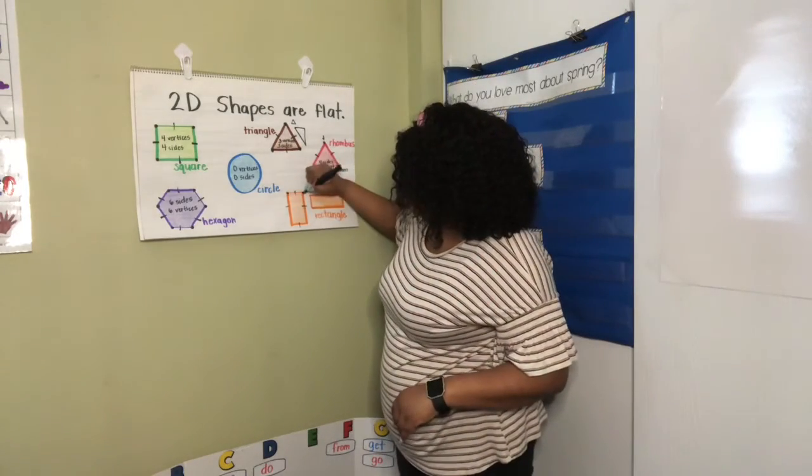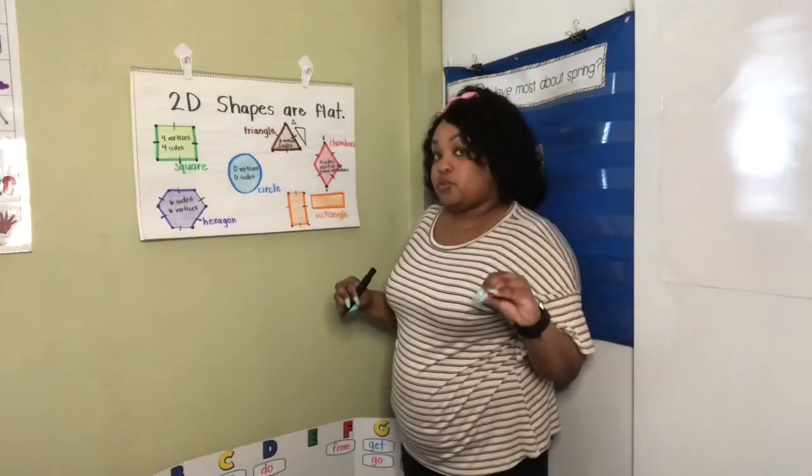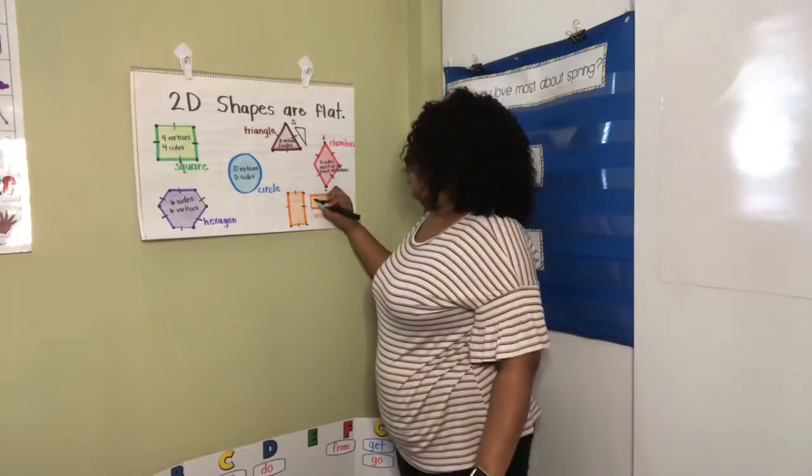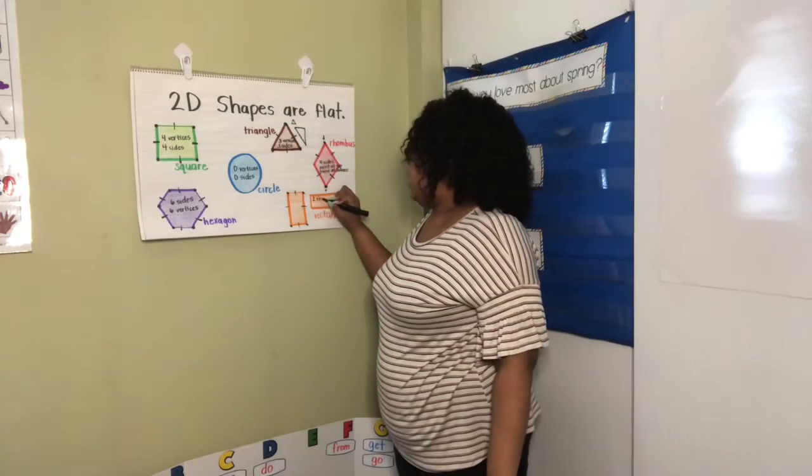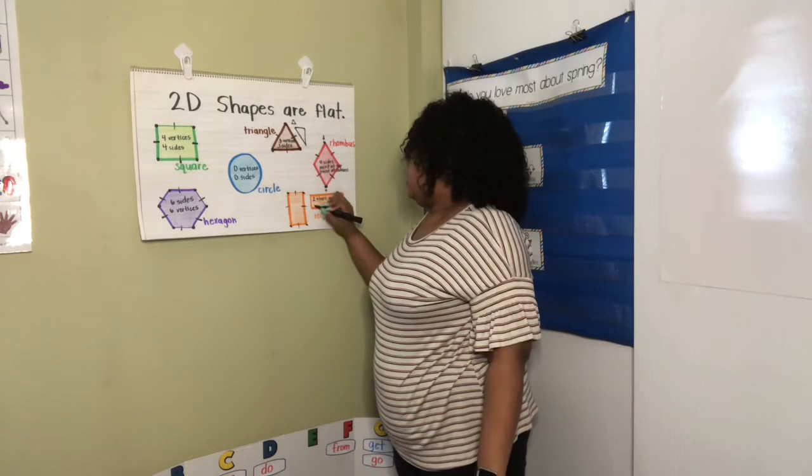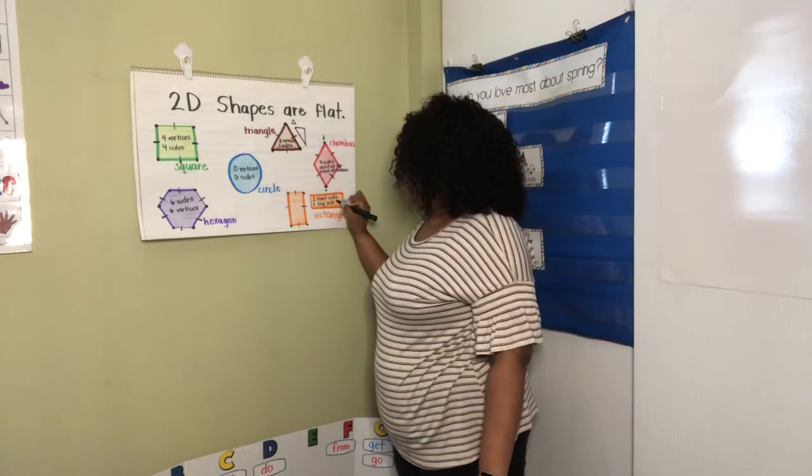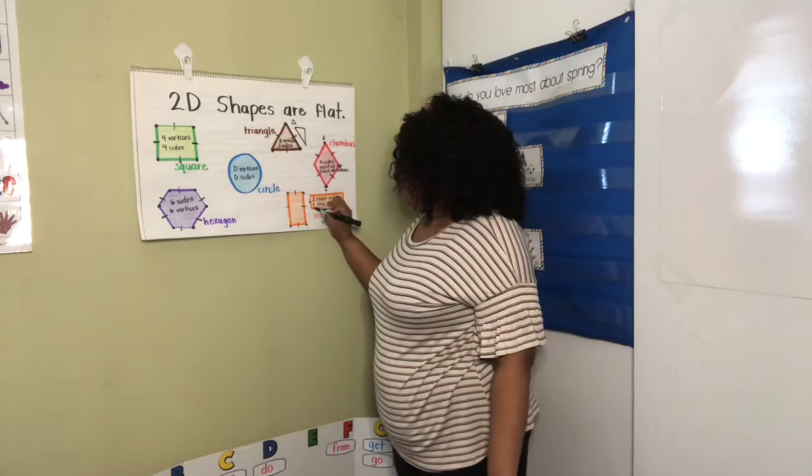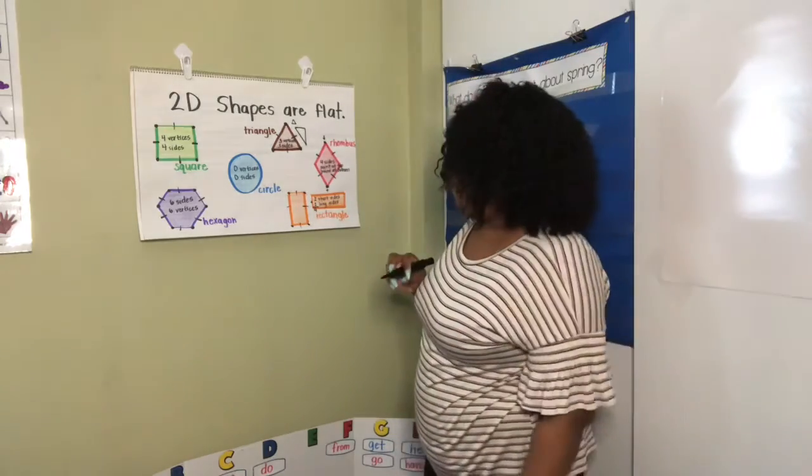And it also has four vertices. One, two, three, four. A rectangle, remember, because this makes it extra special, has two short sides and two long sides. Two plus two equals four.